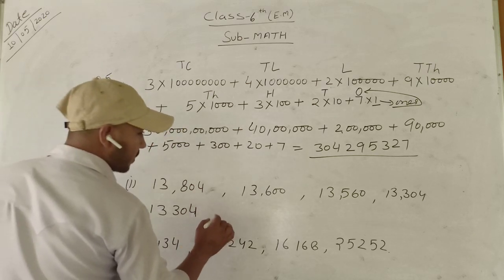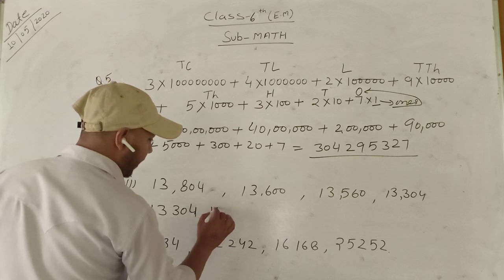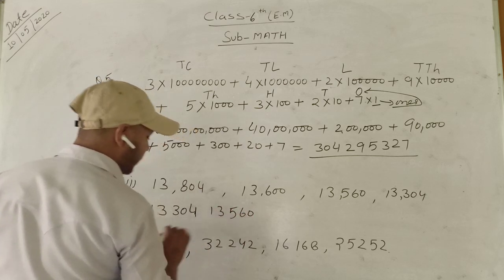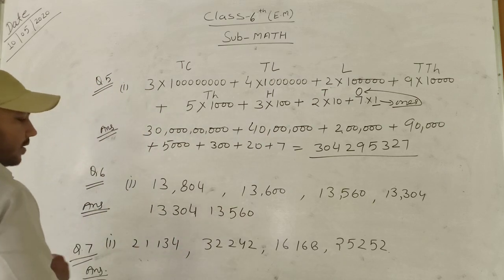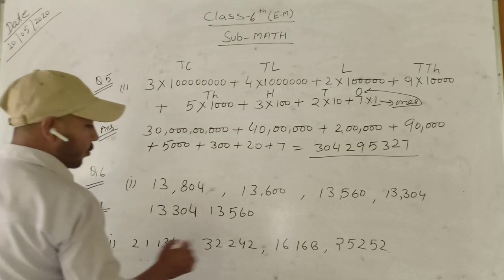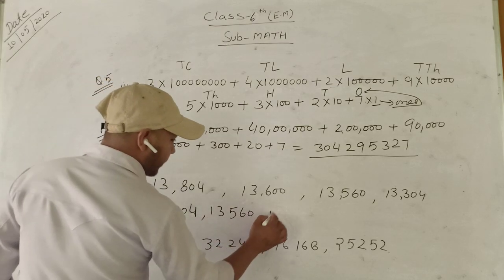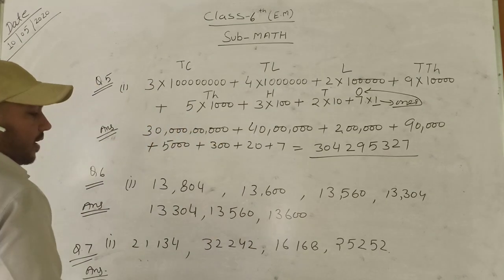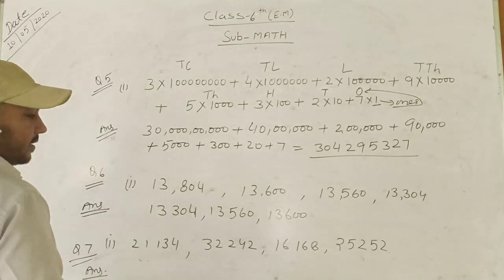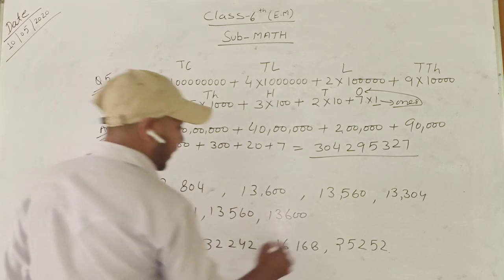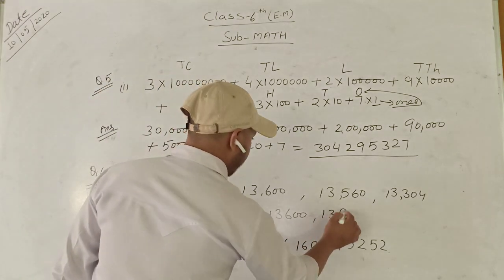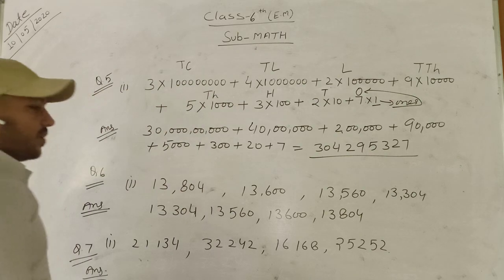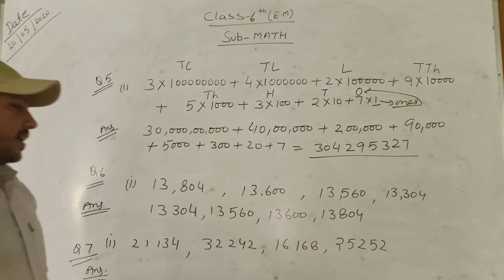After that, 13,560 is more than 13,304. Then 13,600 is more than 13,560. And 13,804 is more than 13,600.